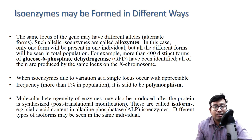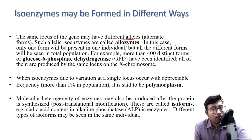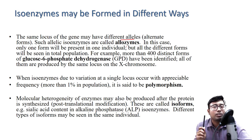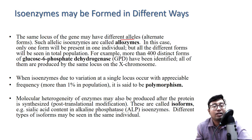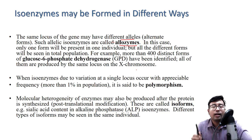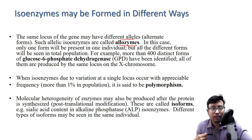The same locus of a gene may have different alleles — alternate forms. Such allelic isoenzymes are also known as allozymes. These genetic alleles may differ based on our genetic makeup, so the same form of enzyme may be different in different individuals because our genetic makeup differs, even though it is present at the same locus.